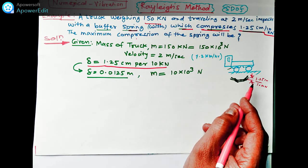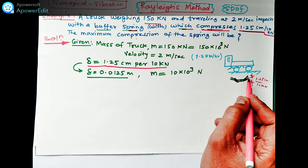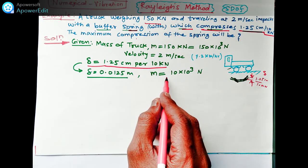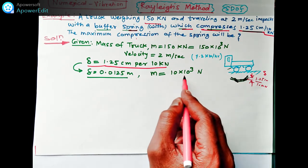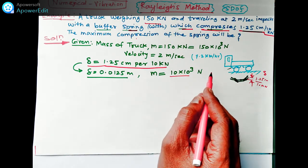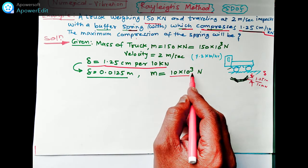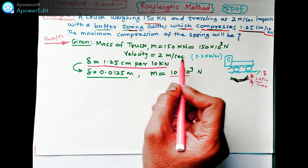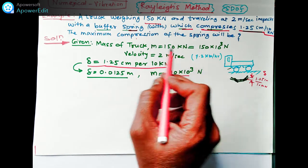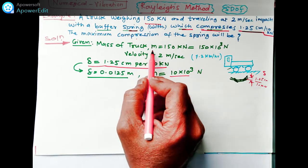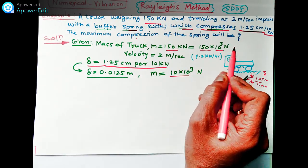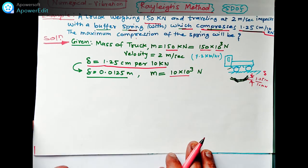So here what is given to you? The deflection delta is given to you for m weight 10 kN, means 10 into 10 raise to 3 N. Velocity of truck is given to you 2 m per second. And the total mass of truck is actually 150, means 150 into 10 raise to 3 N.